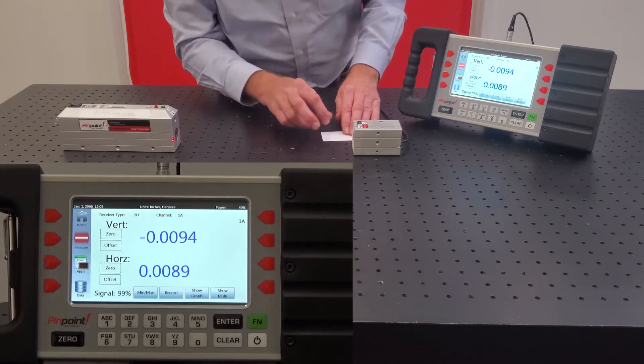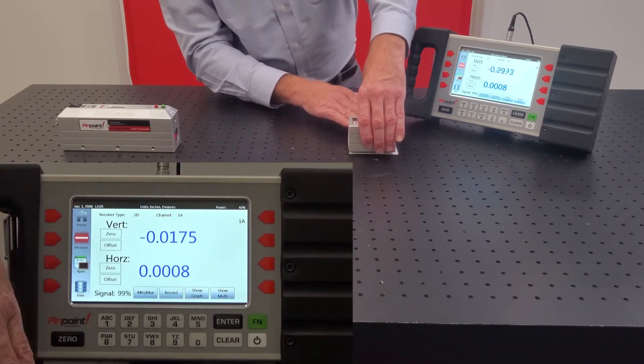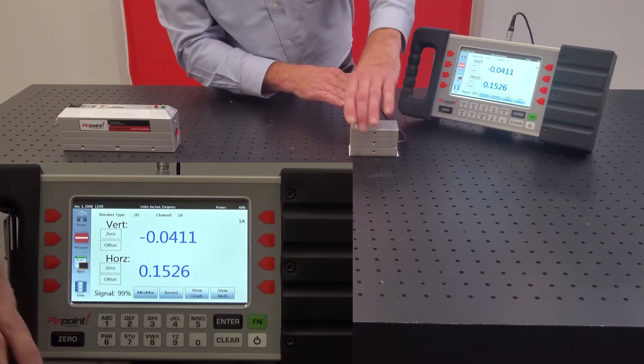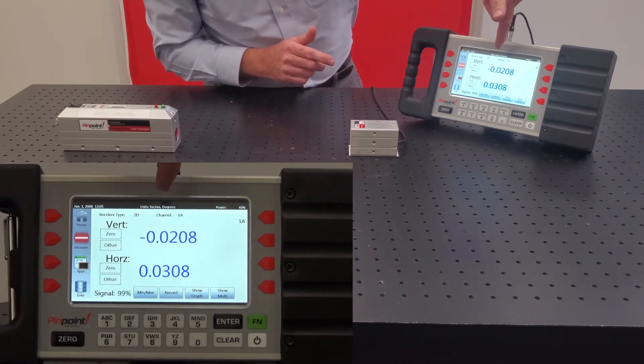If I place a card underneath the receiver, it is elevated upwards, and the vertical reading changes appropriately.